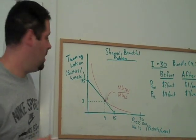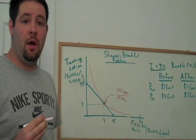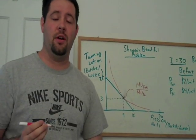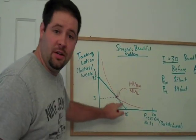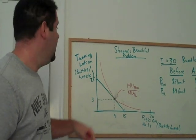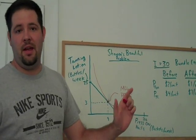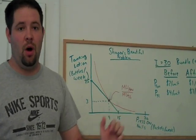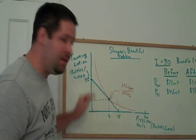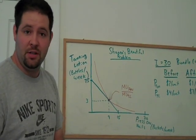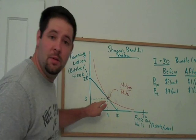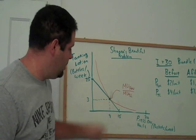We also know from the previous lecture when we constructed that budget constraint, that the slope of this budget constraint, the negative slope of it, is the price of x over the price of y. Now, notice one thing about the slopes of the budget constraint and the indifference curve at the point of tangency. They're equal.